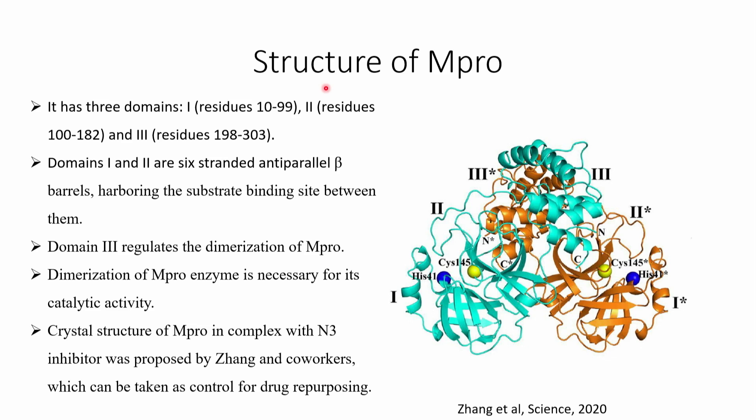Let us first understand about the MPRO protein. MPRO protein is a dimer protein with three domains. Domain 1 and domain 2 are six-stranded anti-parallel beta barrels harboring the substrate binding site between them. Domain 3 regulates dimerization of the MPRO protein, and dimerization is known to be necessary for catalytic activity. The crystal structure of MPRO with an inhibitor has been published in a Science paper. We took that structure and looked at FDA approved drug binding with MPRO.